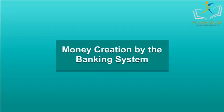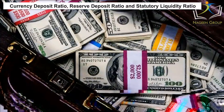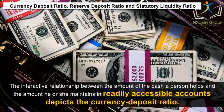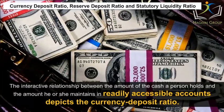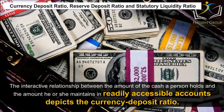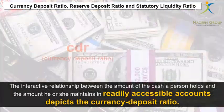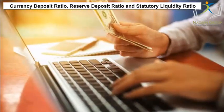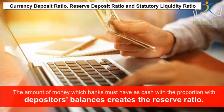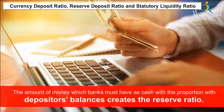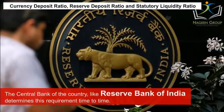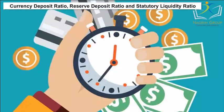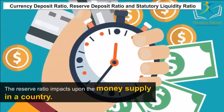Money Creation by the Banking System: Currency Deposit Ratio, Reserve Deposit Ratio, and Statutory Liquidity Ratio. The interactive relationship between the amount of cash a person holds and the amount maintained in readily accessible accounts depicts the currency deposit ratio. On the other hand, the amount of money banks must have as cash in proportion to depositors' balances creates the reserve ratio. The central bank, like the Reserve Bank of India, determines this requirement from time to time, and by a given time period, the reserve ratio impacts the money supply in a country.